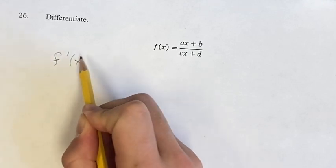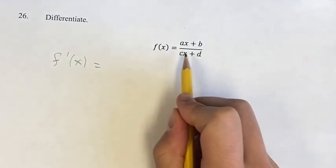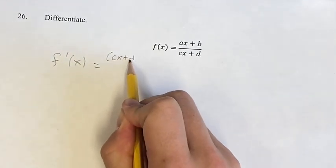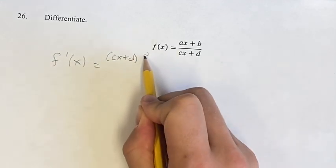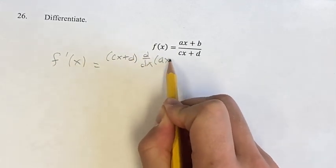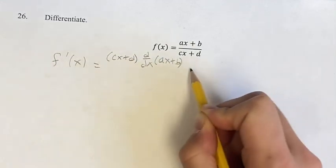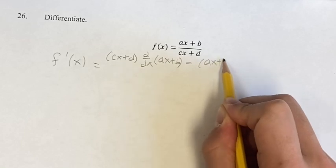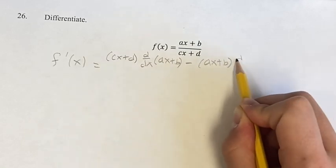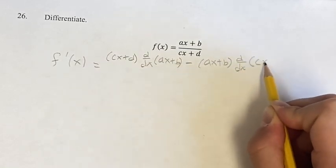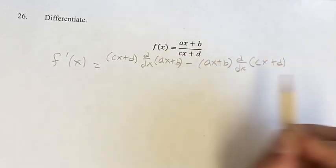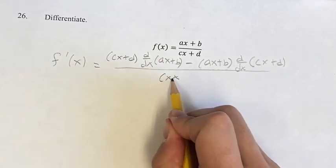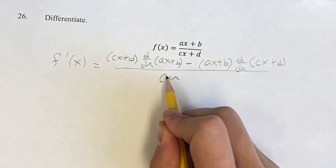So our derivative is going to be equal to the denominator times the derivative of the numerator, minus the numerator times the derivative of the denominator, all over the denominator squared.